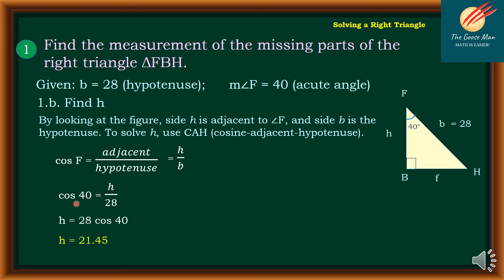Using our calculator, h is equal to, just simply press 28 times cosine 40 degrees, equal sign. So h is equal to 21.45 units.